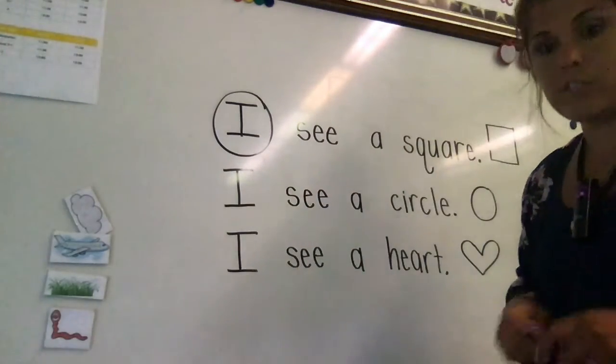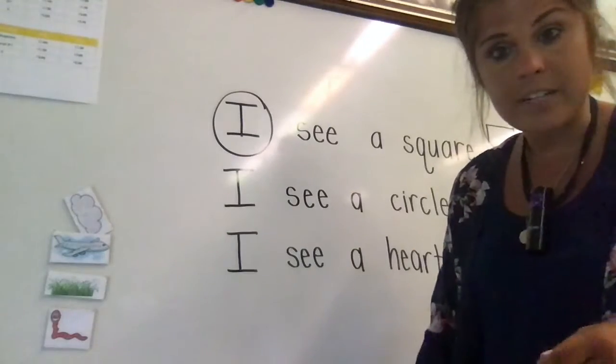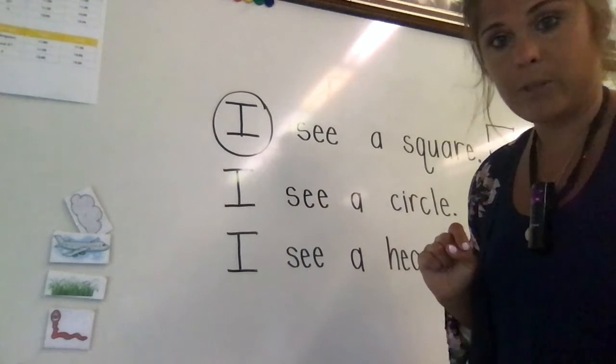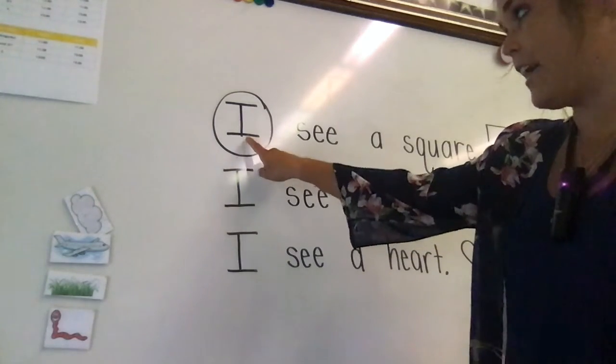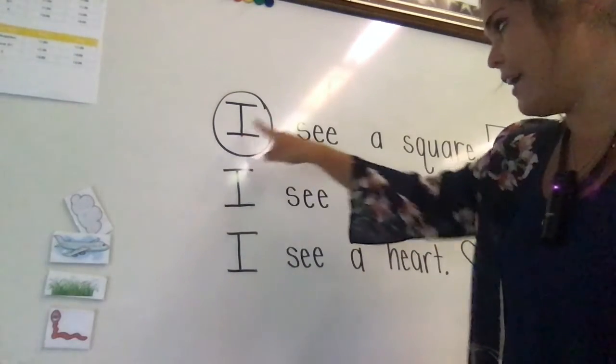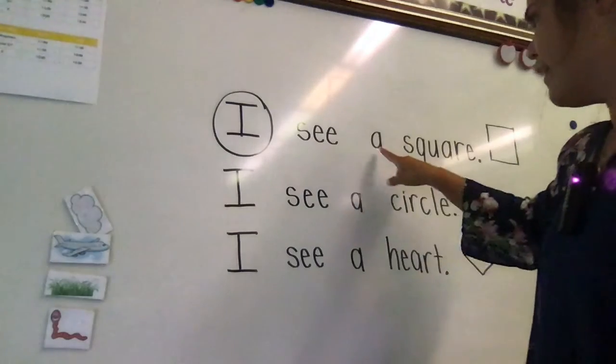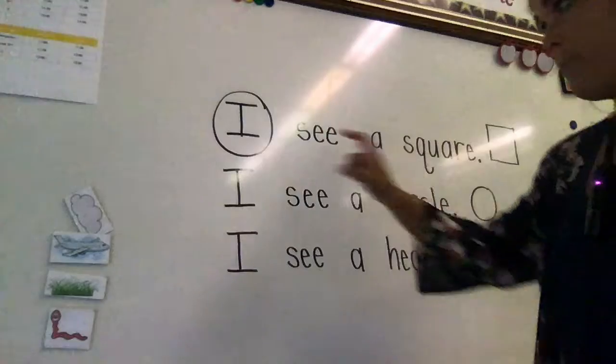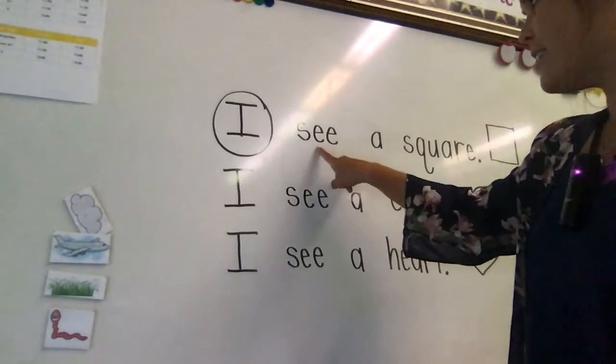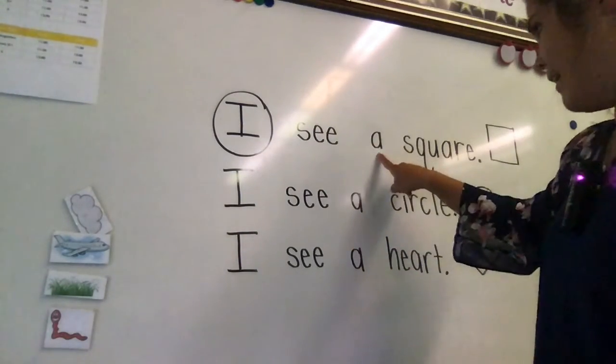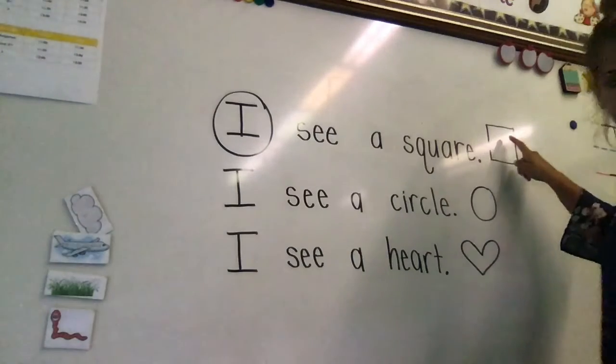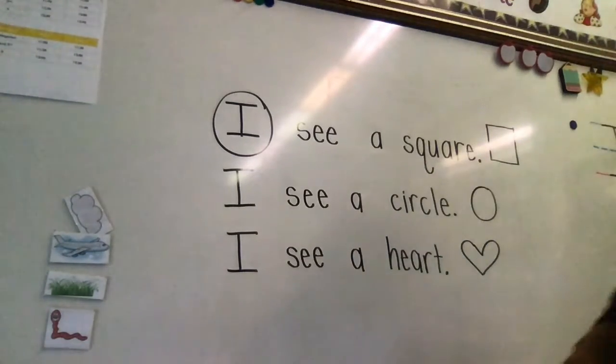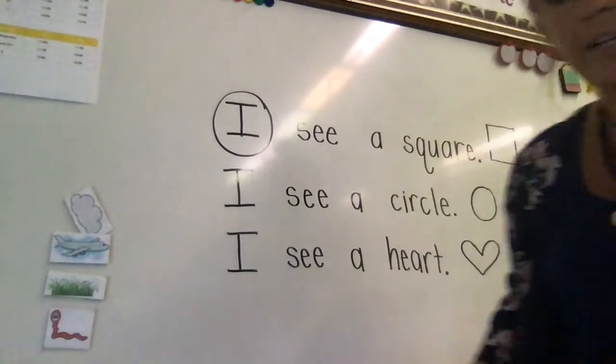Miss Munn is going to read you this sentence and as I read, you're going to point on your paper and follow along with me. Okay? This sentence says, I see a square. You guys read it with me. I see a square. I have a picture clue over here to tell me what this word is. So you guys should be following along on your paper as we read.